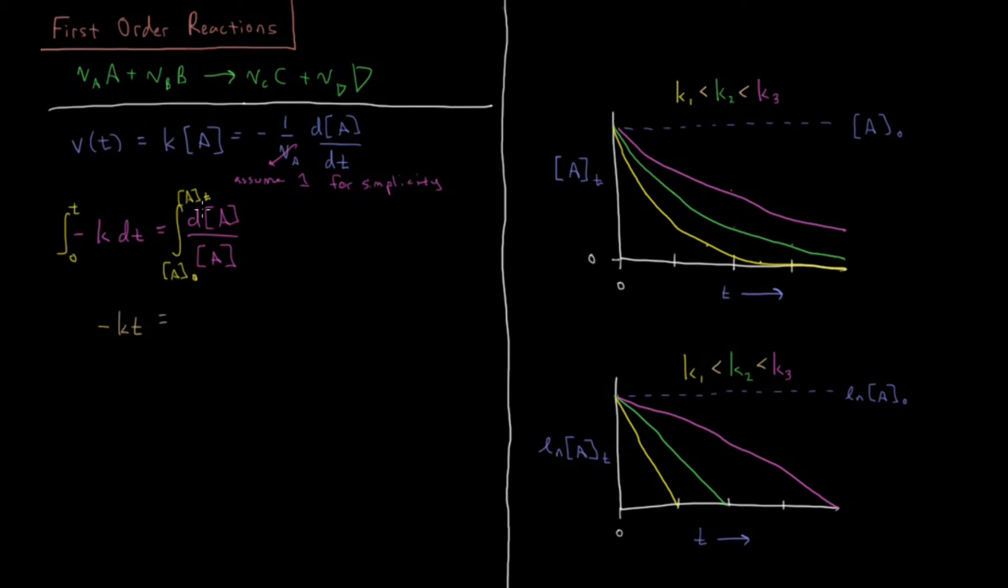The integral of 1 over A DA is the natural log of A. That's integral of 1 over X is natural log of X. And then we have natural log of AT minus natural log of A0 and the difference of two natural logs is their ratio. So this definite integral comes out to be natural log of AT over A0.